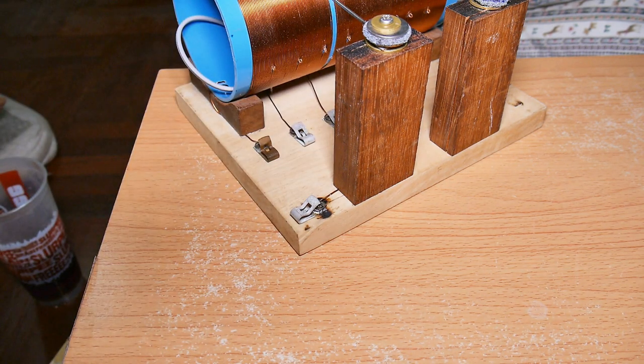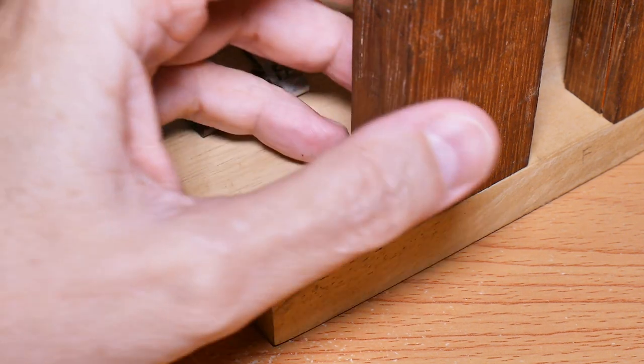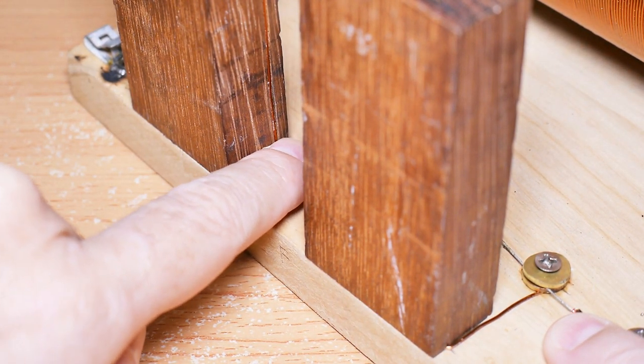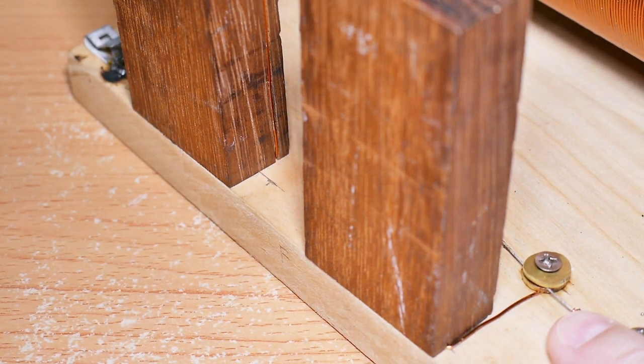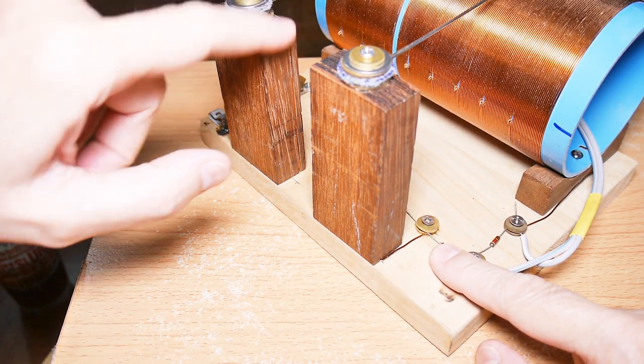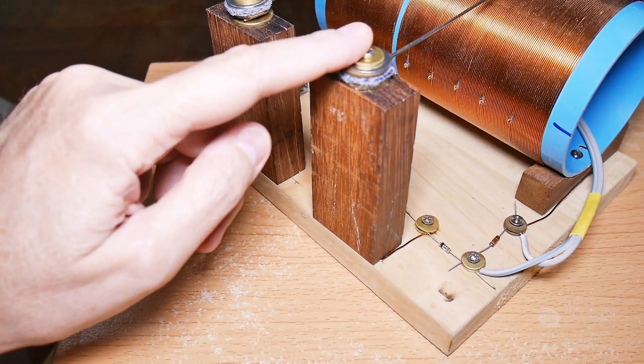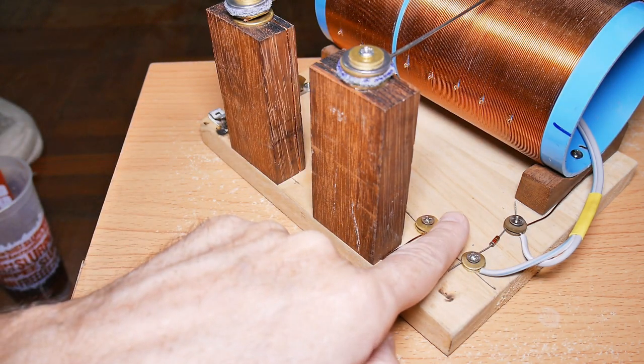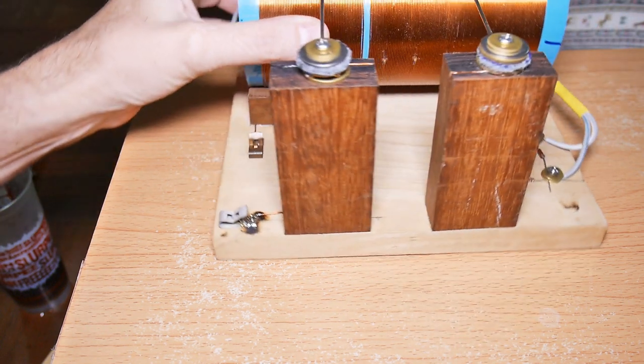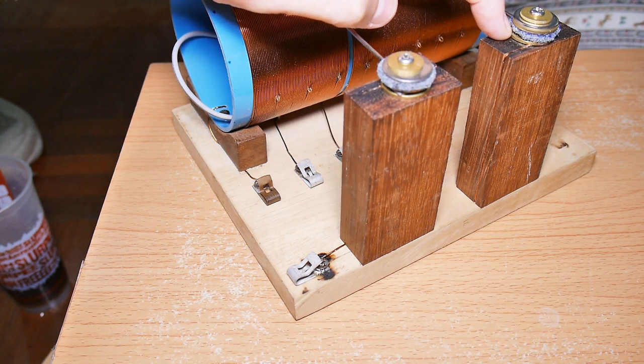The wire runs underneath this block - there's a groove in the bottom of the block. It runs up the side in a groove, then across, and is soldered to this bottom washer. This tower is connected to this point in a similar way. You can see the wire runs here, goes underneath the block, comes up the back side, goes across the top, and is soldered onto the bottom brass washer.